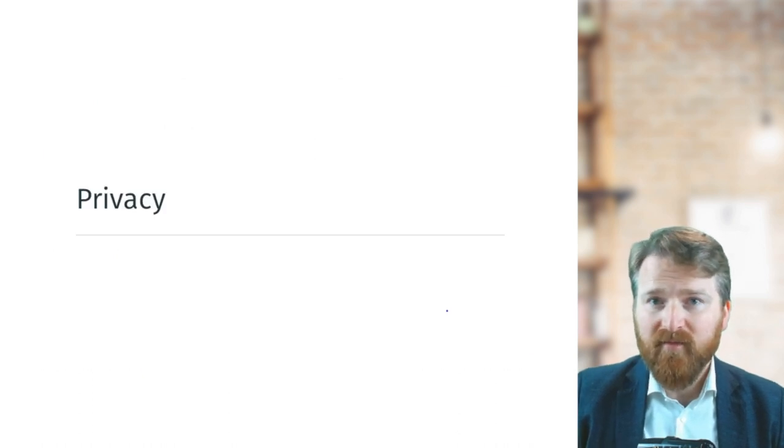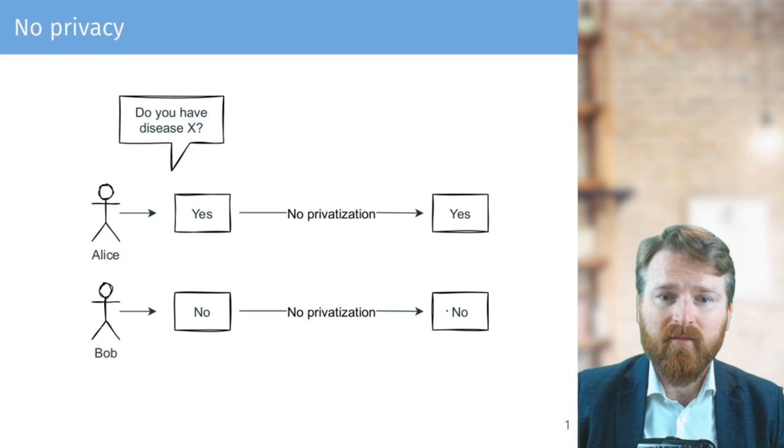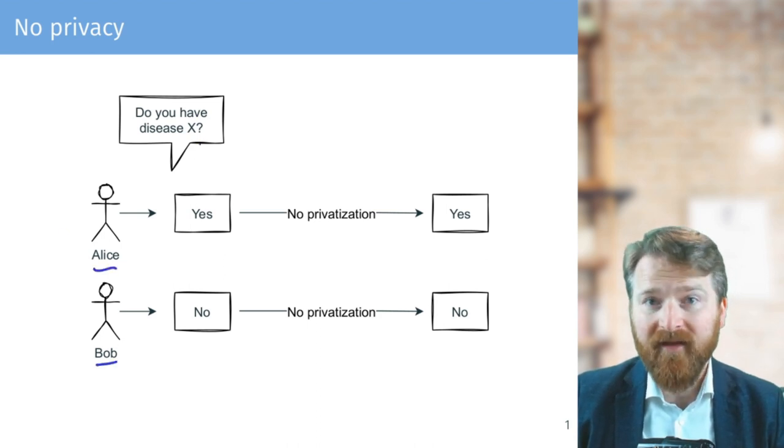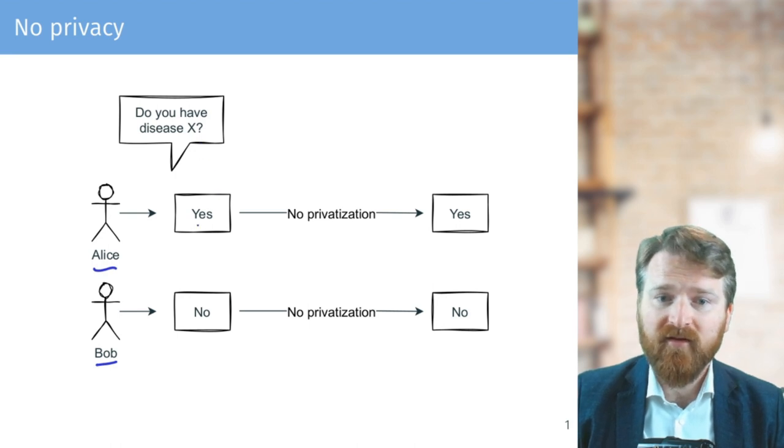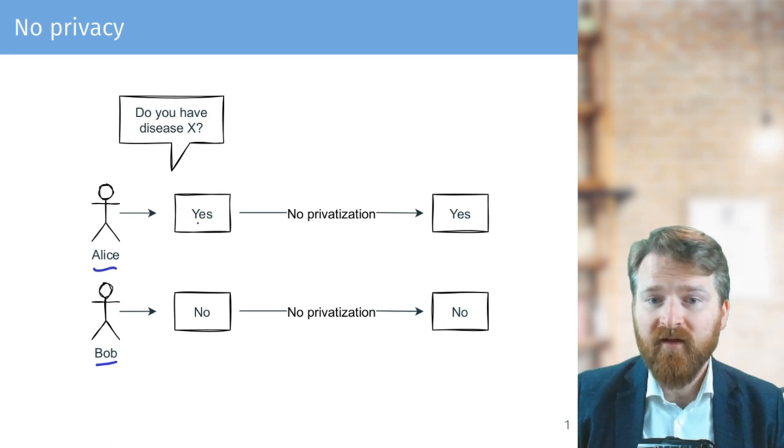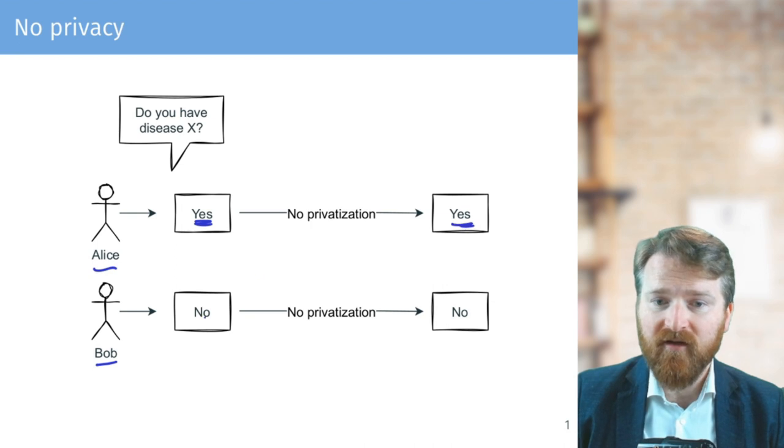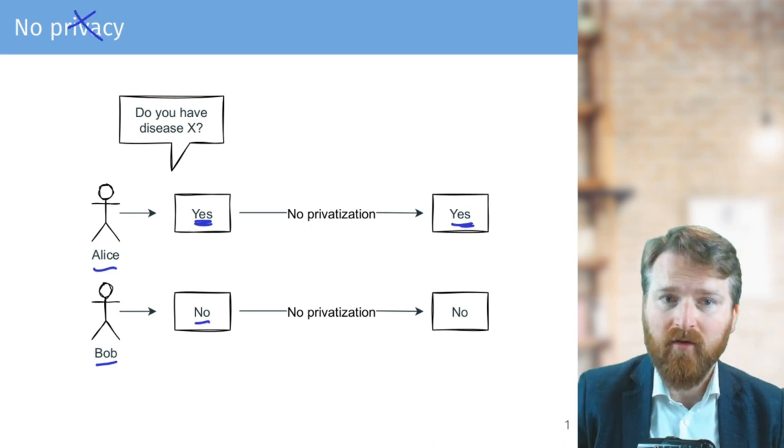First, let's ask what we mean by privacy, and here I will give you an example. So let's have two persons, Alice and Bob, and we might ask them whether or not they have a certain disease, which is sensitive information. If there is no privatization, we just get the true answer here, so we leak all the privacy.